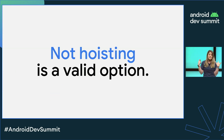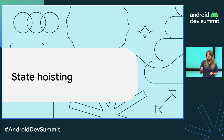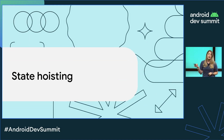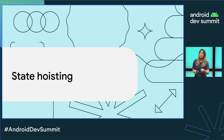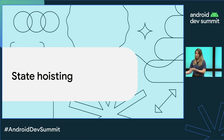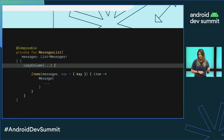As you can see, not hoisting is a valid option. But not hoisting your state makes your UI less reusable, and there are some cases in which we need to apply UI logic to it before sending it forward to other Composable functions — and that's why we need state hoisting.